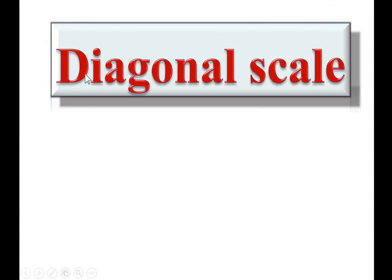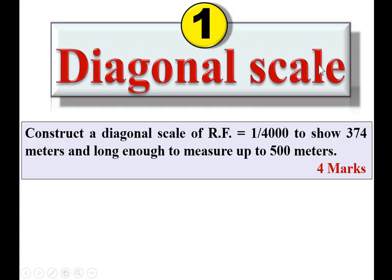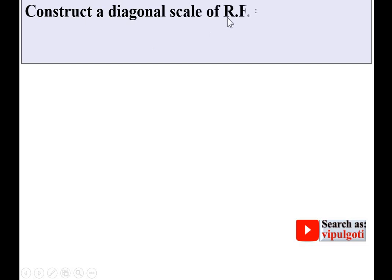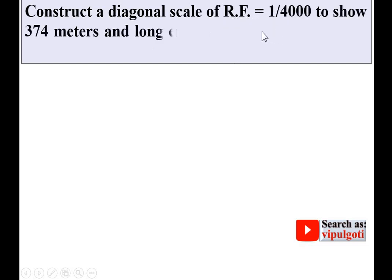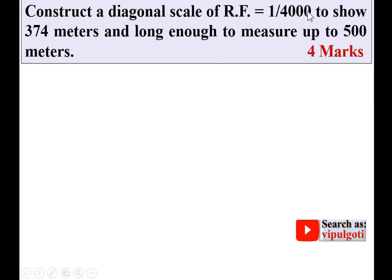Today we are going to discuss diagonal scale. The problem we are going to solve is: construct a diagonal scale of RF equal to 1 upon 4000 to show 374 meters, long enough to measure up to 500 meters. The weightage in the examination is 4 marks for this problem.